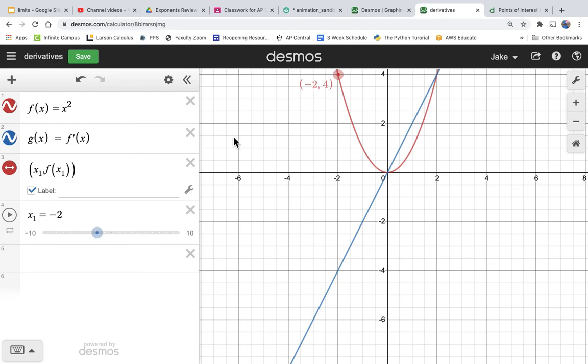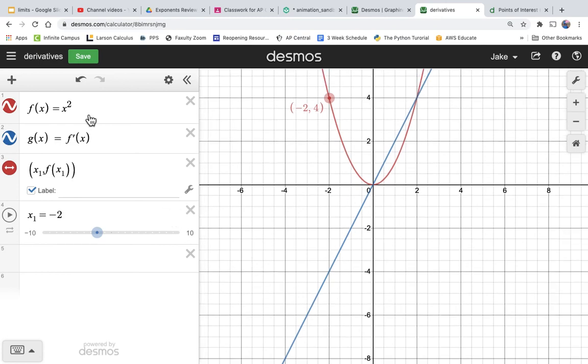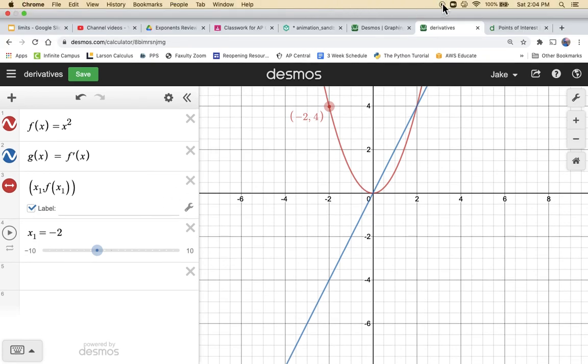So just playing around with the derivative on Desmos. It's just as simple as defining your function and then using the prime notation, set a new function equal to the prime notation of that original function, and then you have the graph of the derivative. Hope that helps. Play around with that until you get comfortable.